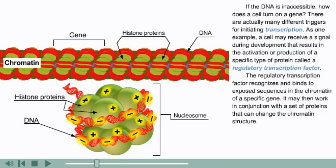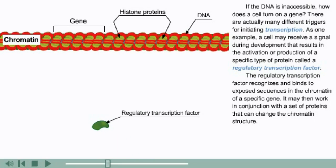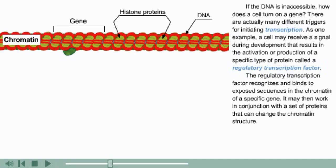If the DNA is inaccessible, how does a cell turn on a gene? There are actually many different triggers for initiating transcription. As one example, a cell may receive a signal during development that results in the activation or production of a specific type of protein called a regulatory transcription factor. The regulatory transcription factor recognizes and binds to exposed sequences in the chromatin of a specific gene, and may then work in conjunction with a set of proteins that can change the chromatin structure.